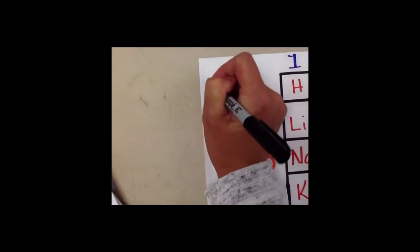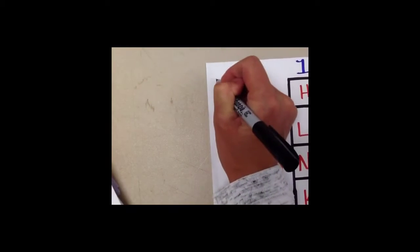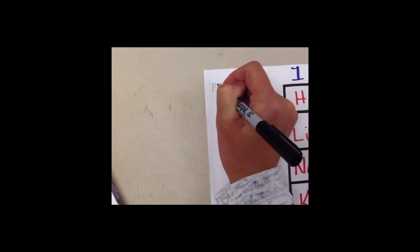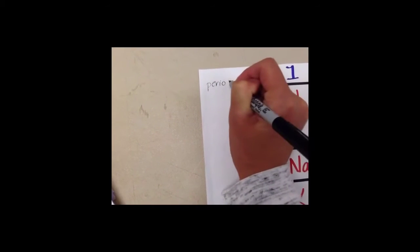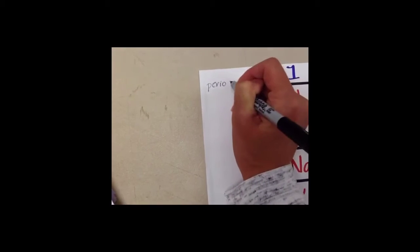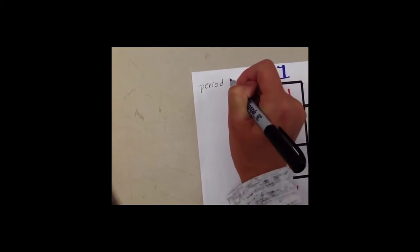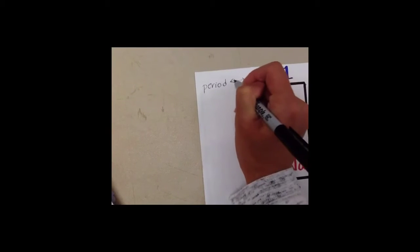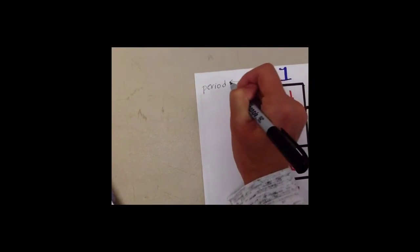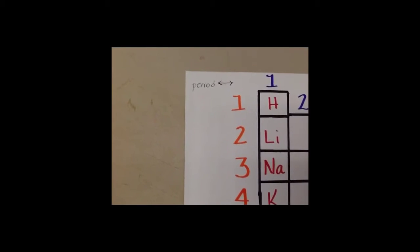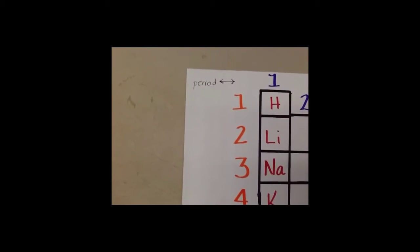You've probably noticed the numbers on the side — one through seven. These are your period numbers. Your period numbers go horizontal, or left to right. These are very important as well, and we'll discuss what they tell us in just a minute.